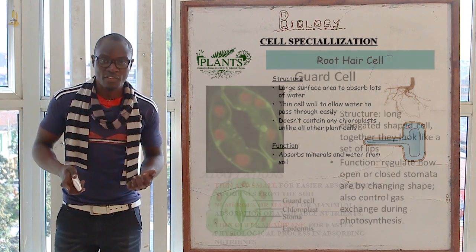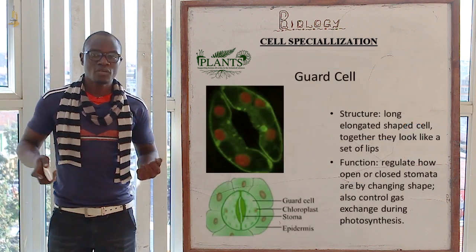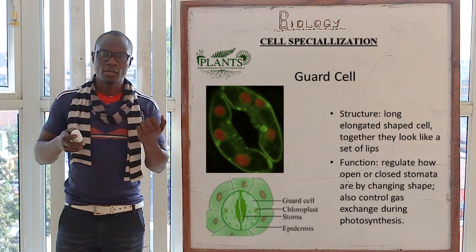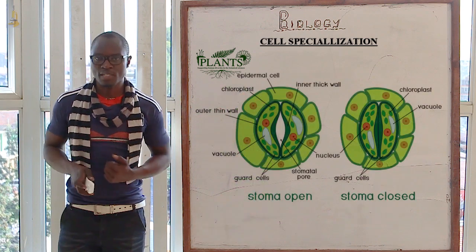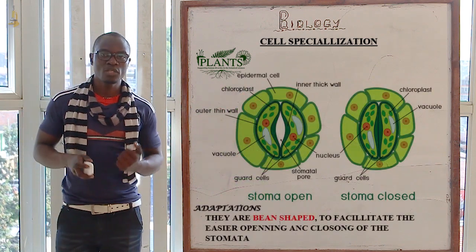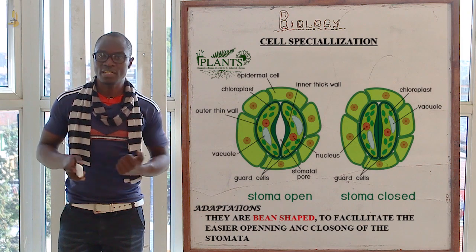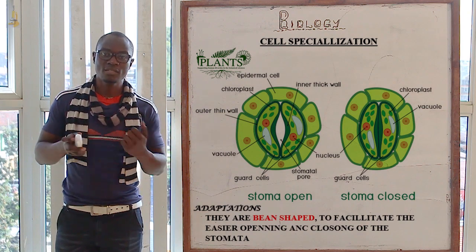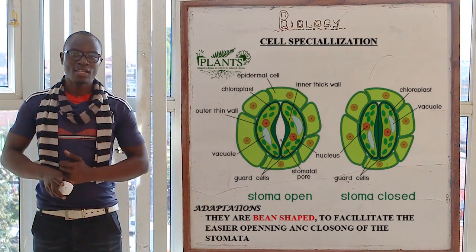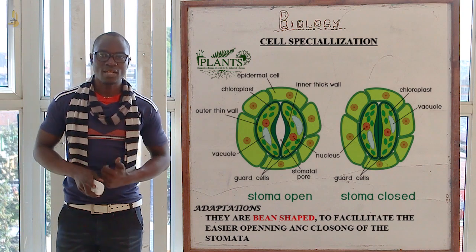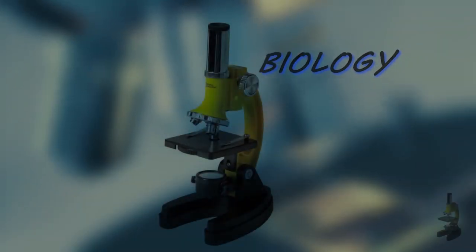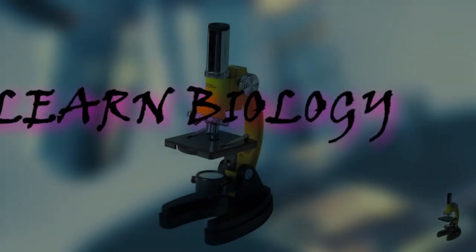The next one we have is the guard cells. The function of the guard cells is that they control the opening and closing of the stomata. They are bean-shaped which mainly facilitates this process. Let's meet on the next class as we now discuss tissues.